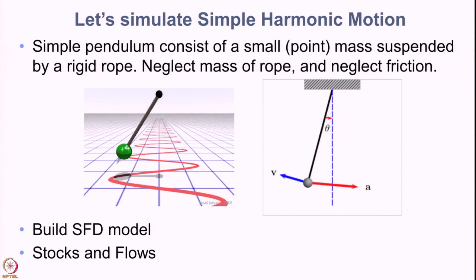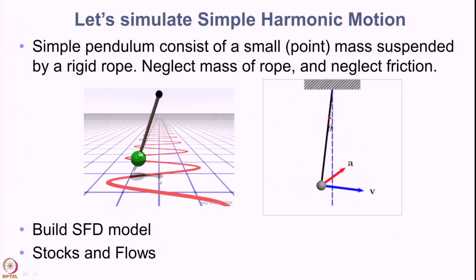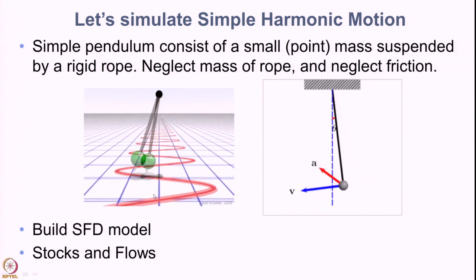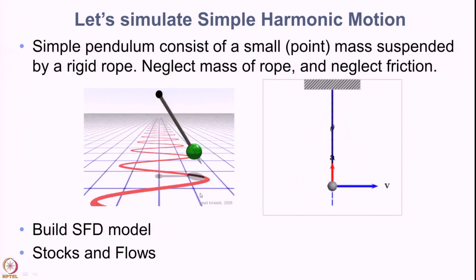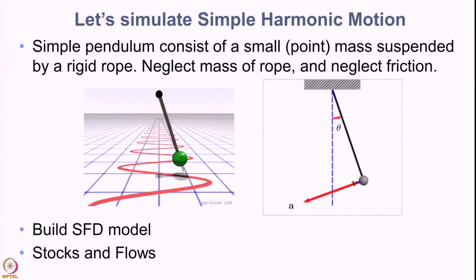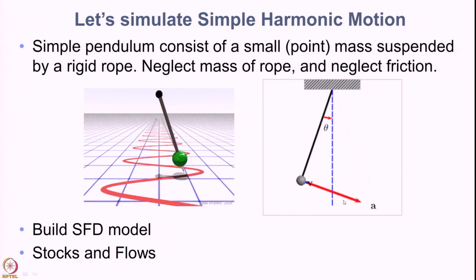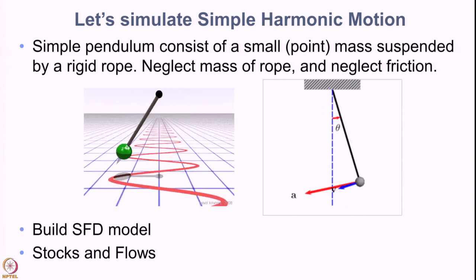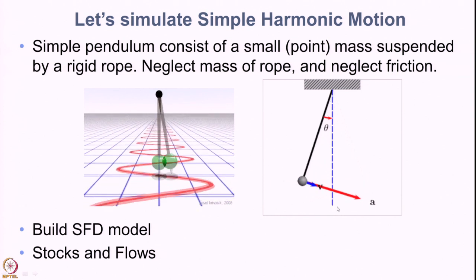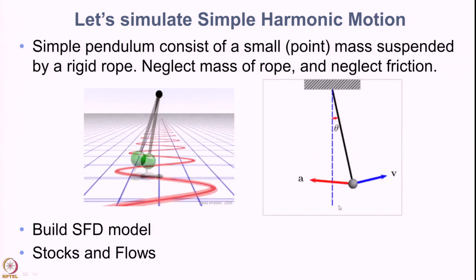The pendulum starts in the middle and then oscillates from one extreme end to the other so that the position keeps changing between the two extremes. In the right-side figure there are two arrows — a blue arrow representing the velocity of the pendulum and a red arrow representing the direction of acceleration on the pendulum.